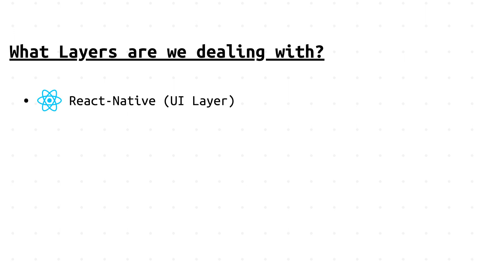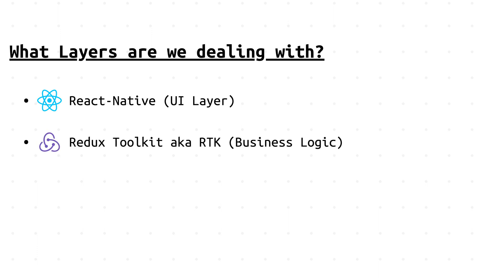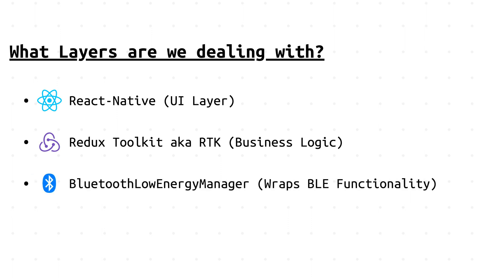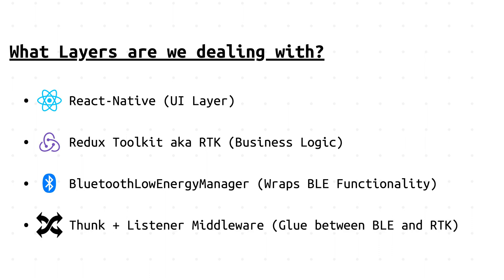Before starting to code, let's review the different layers of the application we're going to be working with. The first layer is the React Native layer, which is in charge of the UI. Next is Redux Toolkit, the state manager, which handles much of the application's business logic and state. We're going to create a singleton BLE manager class to wrap the PLX library functionality. Finally, we'll use RTK Thunks and listener middleware, which will act as glue between our global store and the BLE manager class.